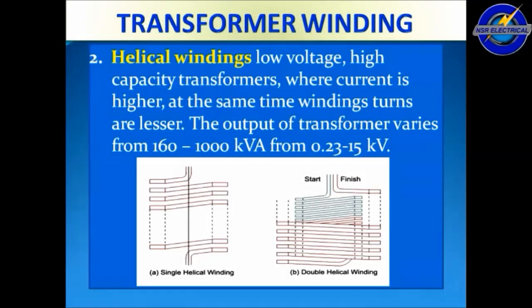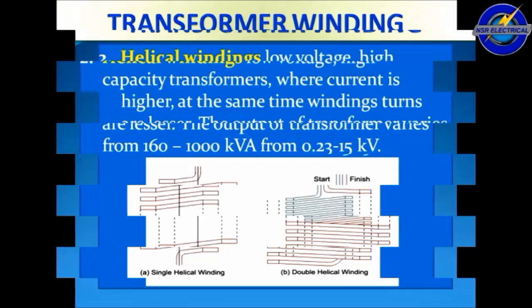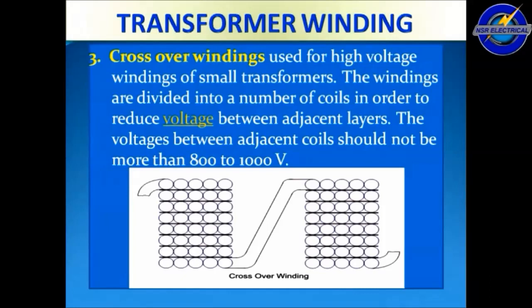The second one is helical windings. Helical windings are used in low voltage, high capacity transformers where current is higher and at the same time the number of winding turns is lesser. The output of the transformer varies from 160 to 1000 kVA and from 0.23 to 15 kV.